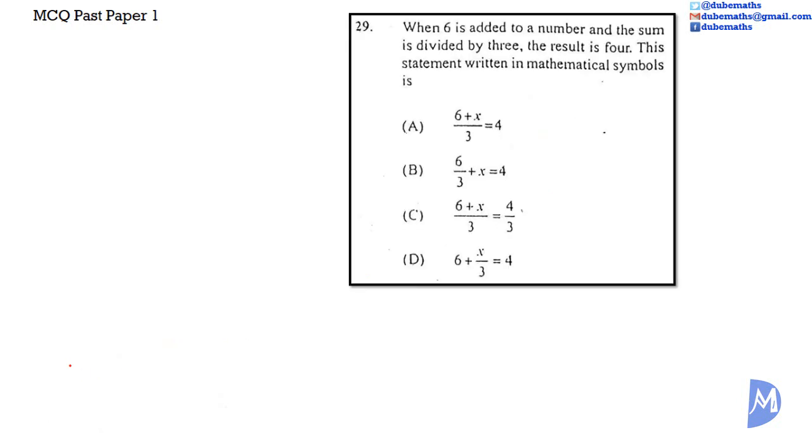Question 29. When 6 is added to a number and the sum is divided by 3, the result is 4. This statement written in mathematical symbols is: Is it A? 6 plus x all over 3 is equal to 4. Is it B? 6 over 3 plus x is equal to 4. Is it C? 6 plus x all over 3 is equal to 4 thirds. Or is it D? 6 plus x divided by 3 is equal to 4.